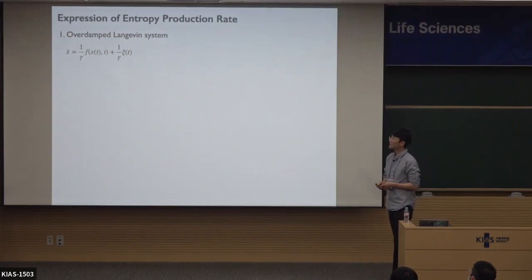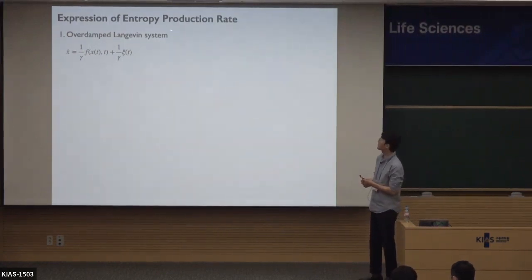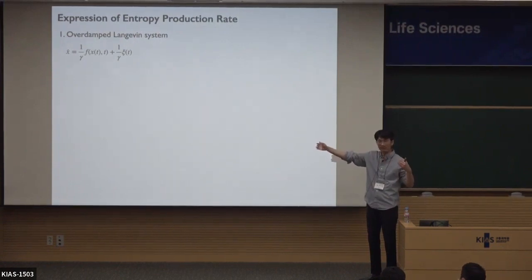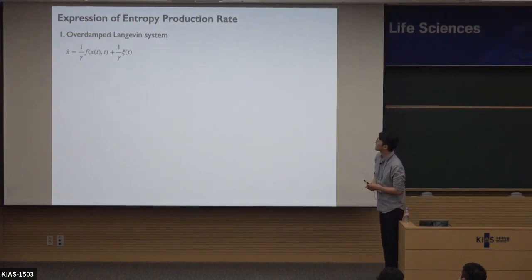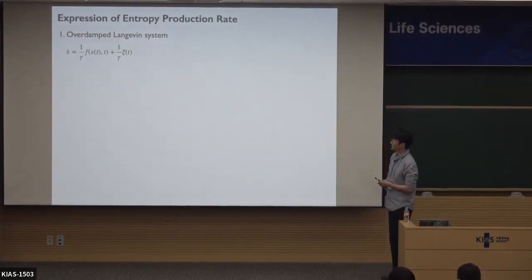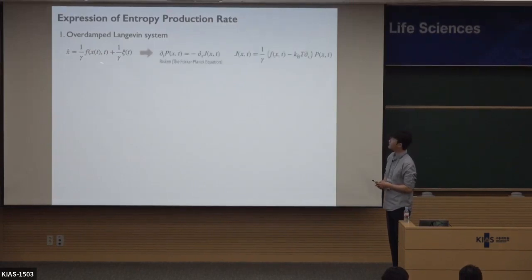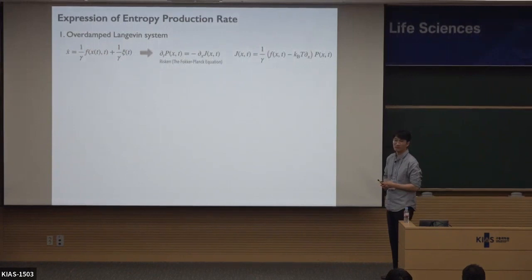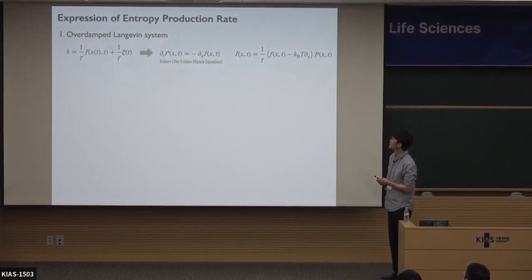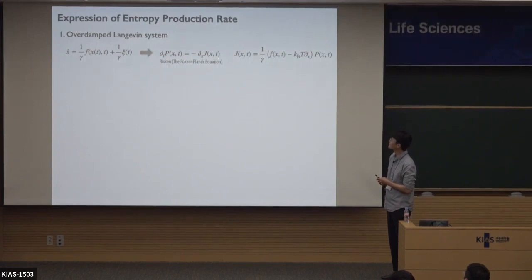Now I want to show the expression of entropy production rate. This is different from entropy production — entropy production is the total over a finite time, whereas this is the entropy production rate. Let's look at the overdamped Langevin system first. This is the Langevin equation, and this stochastic differential equation can be converted to a partial differential equation called the Fokker-Planck equation. Here P is the probability distribution function of X at time T, and J is the probability current, defined with force F, temperature, and a partial derivative.